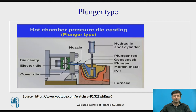An important difference to remember: in cold chamber die casting, the molten metal is melted elsewhere and brought to the machine, whereas in hot chamber die casting — whether gooseneck or plunger type — the molten metal is melted right there, and that source is used with the help of nozzles to fill the cavity.